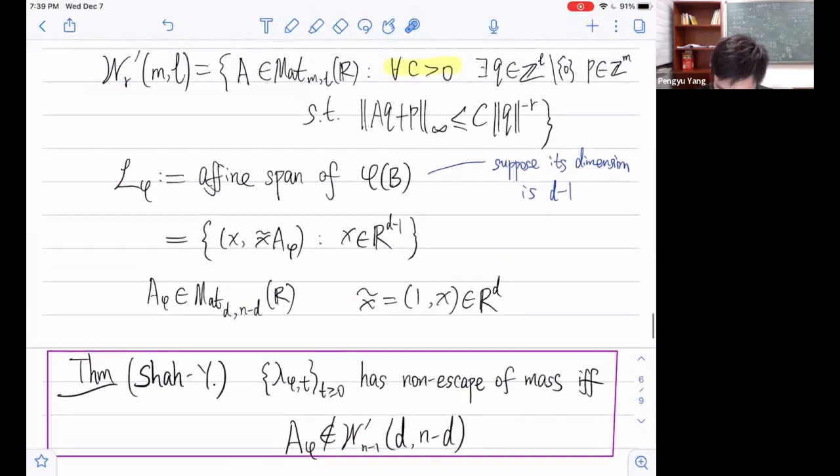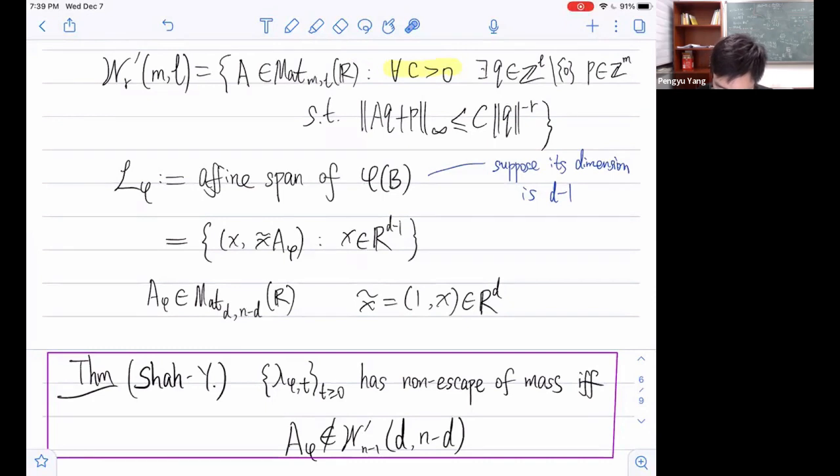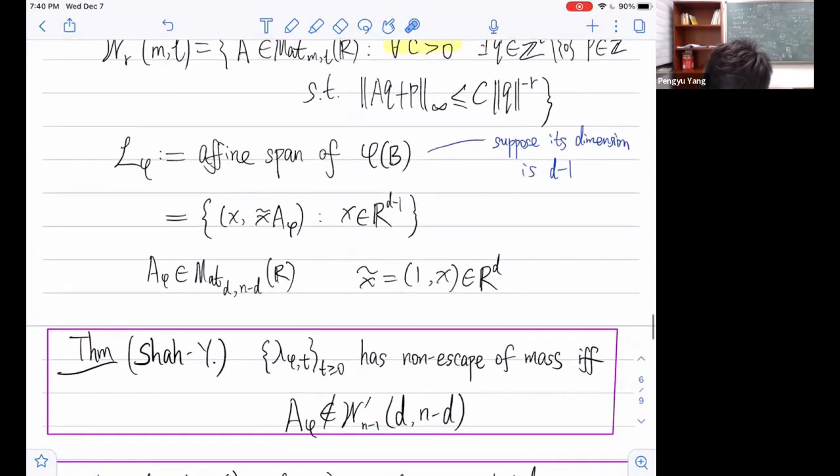How do we parameterize it? We permute the coordinates and we may assume that it's of this form. The first d-1 coordinates are free, and the rest are determined by the first d-1 coordinates. So it's parameterized by such a d by n-d matrix. This actually forms an open subset of the Grassmannian manifold. We have this parameterization of this open subset. Now we can state our main theorems. The first main theorem concerns non-escapable mass.